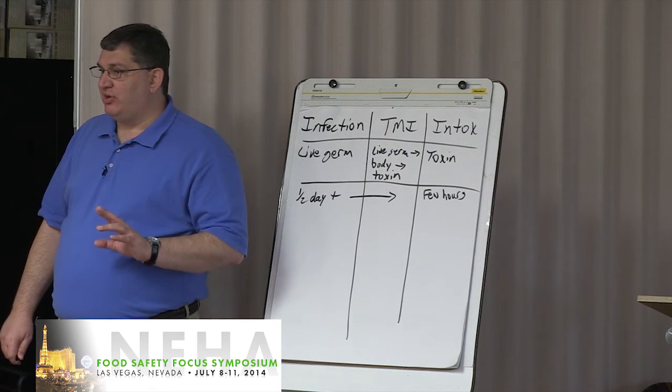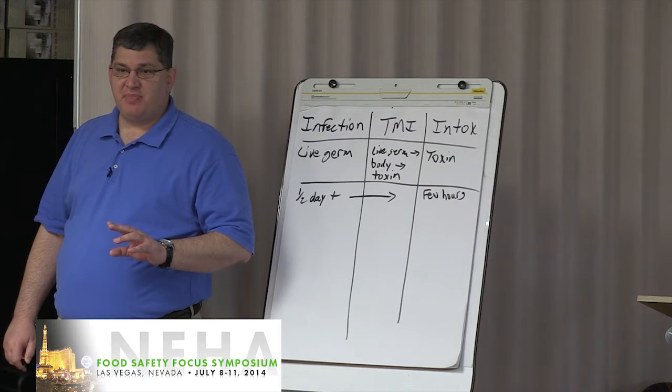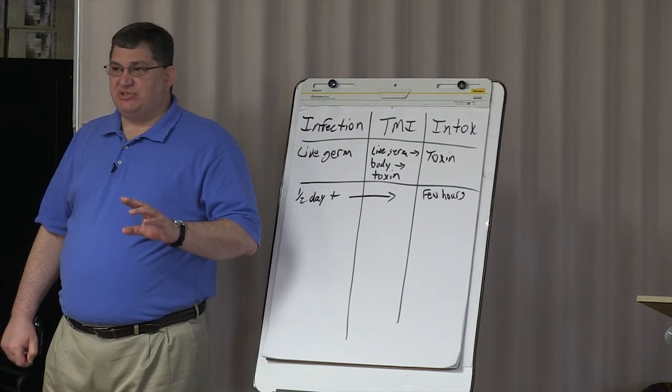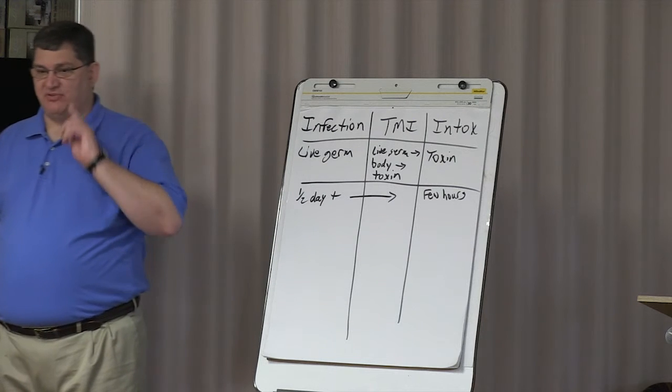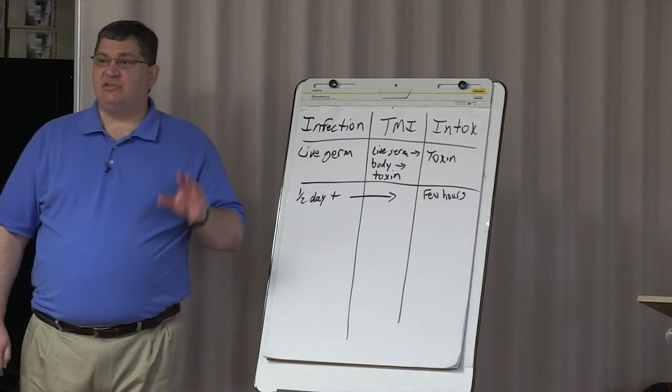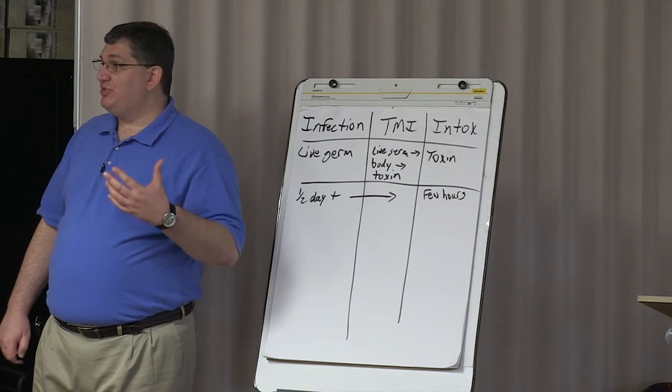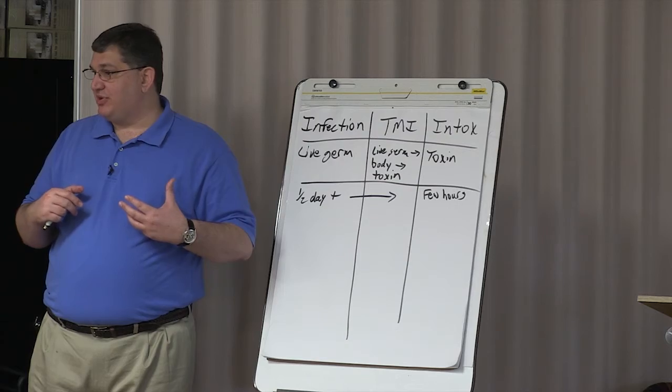When you are trying to learn the onset times for these different illnesses, I would say don't try and memorize this one is 8 to 14 hours. Drive yourself nuts doing that. Try and learn if it's relatively short or relatively long. That's what I try and focus on.